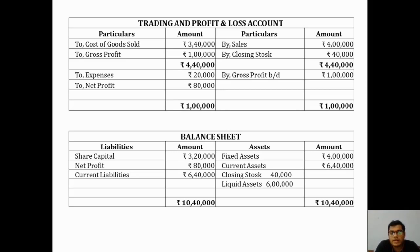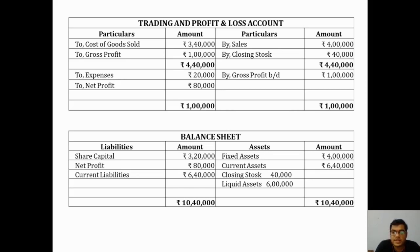Now we draft the balance sheet. On the liabilities side: share capital of 3,20,000 calculated from the fixed assets to share capital ratio, net profit of 80,000 earned this year, and current liabilities of 6,40,000 from the current ratio. On the assets side: fixed assets of 4,00,000 as given, and current assets of 6,40,000 — comprising closing stock of 40,000 plus liquid assets of 6,00,000. The balance sheet totals 10,40,000 on both sides.